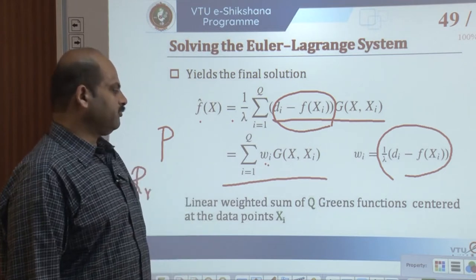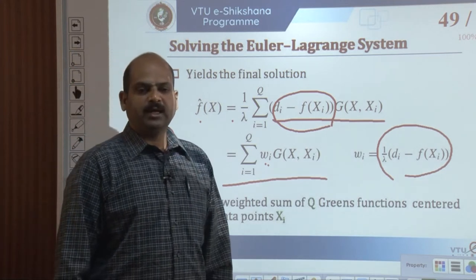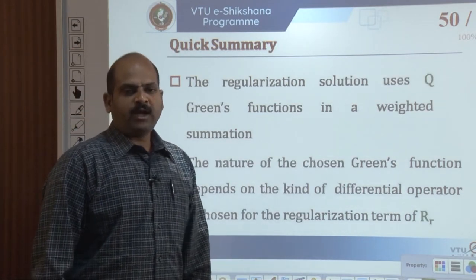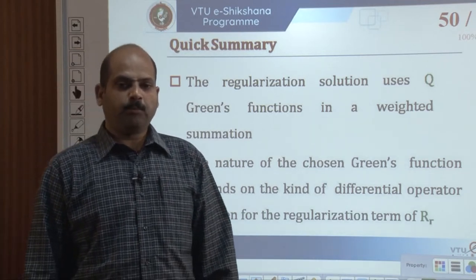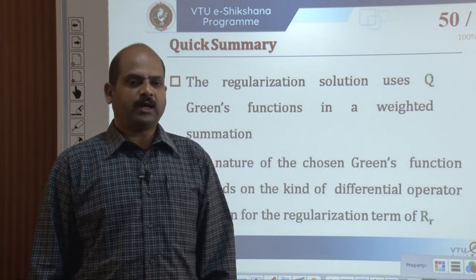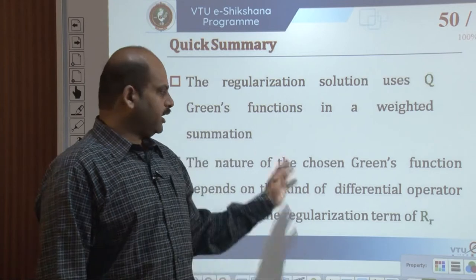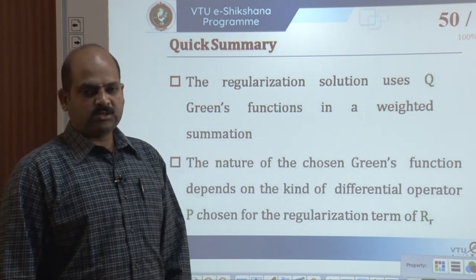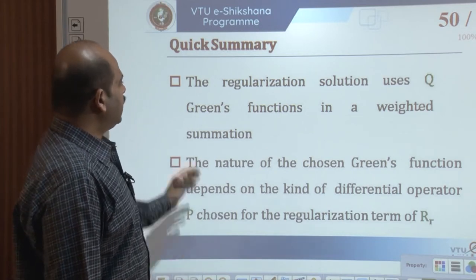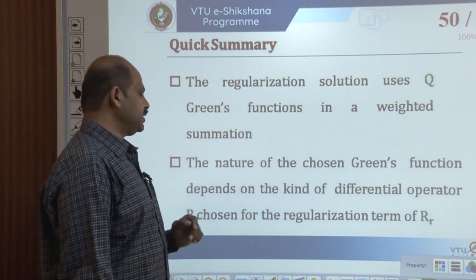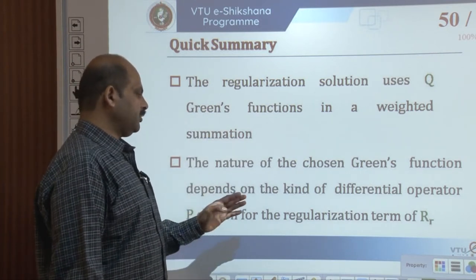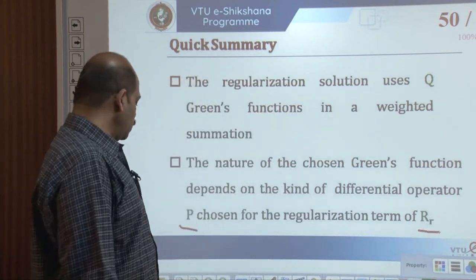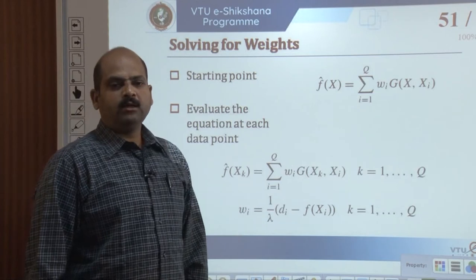The linear weighted sum of q Green's functions is always centered at the data points x_i. We have not completed the solution yet — the weights still have to be determined. To solve for the weights, we evaluate the equation at each of the data points, which yields a set of q functions. The regularization solution uses q Green's functions in a weighted summation; the nature of the chosen Green's function depends on the differential operator p chosen for the regularization term r.